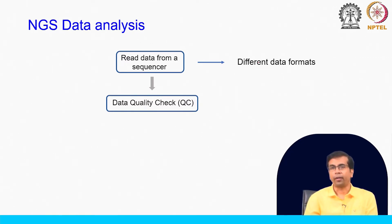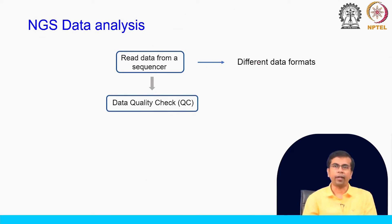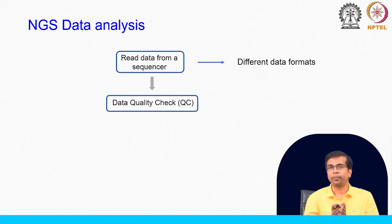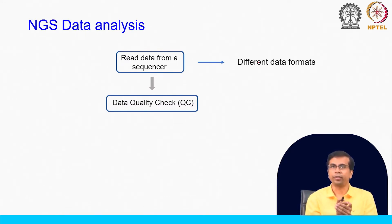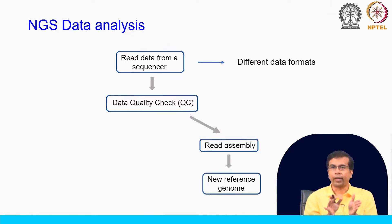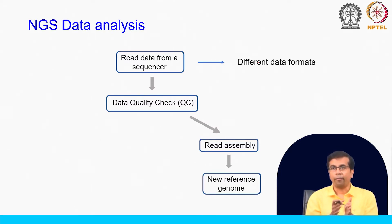The first step in the data analysis process is the data quality check, or QC. We want to ensure that the data we have got is of good quality. Otherwise, if we do all the downstream analysis without this quality check, the conclusions we get might be erroneous. So at the onset, we want to do this data quality check. After you are satisfied that the data is good, you can take different paths for different types of analysis.